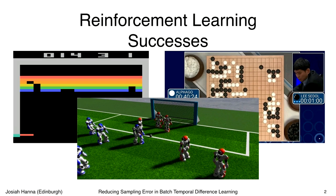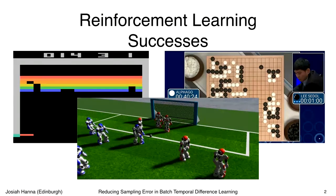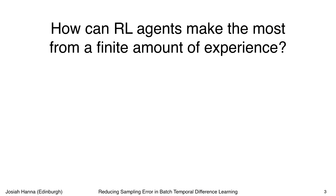These successes have been very good for the field of reinforcement learning and have grabbed a lot of headlines. But if you look closer at them, to learn a successful policy on these tasks, a lot of data has to be used. The agent has to interact with the environment for a long period of time, and currently the data requirements preclude reinforcement learning from being applied to a lot of problems where it potentially could be applied. The big picture question motivating my research is: how can reinforcement learning agents make the most from a limited amount of data?